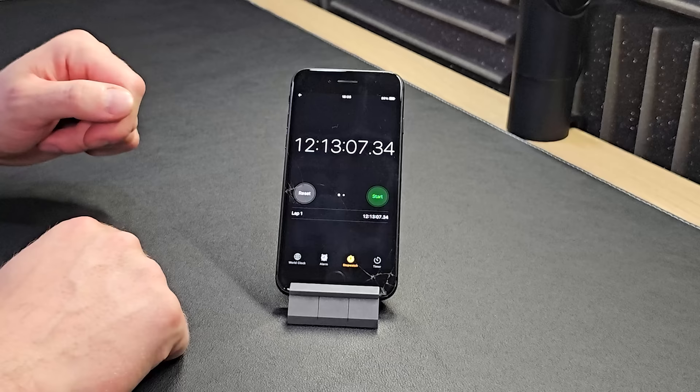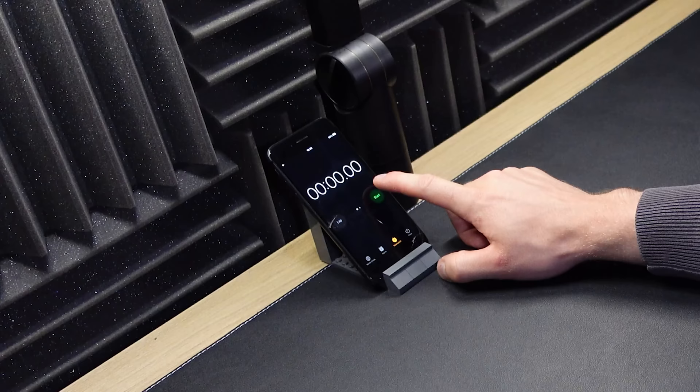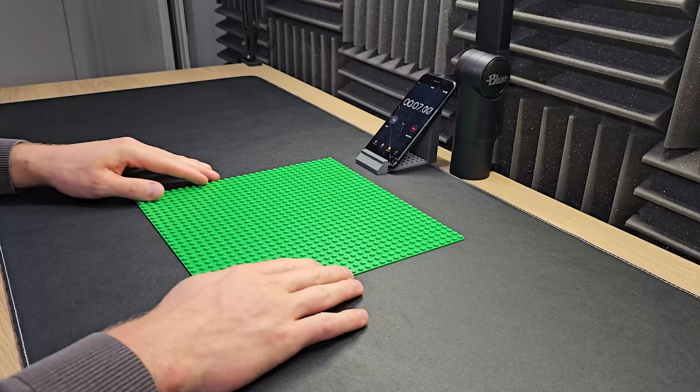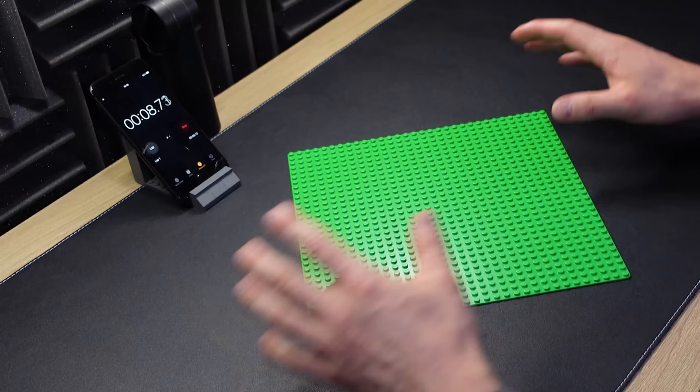Let's get rid of the last LEGO build, because I don't want to remind myself how long that took. Let's begin the timer, and to create these other two gun positions, we will be using this 32x32 green plate.